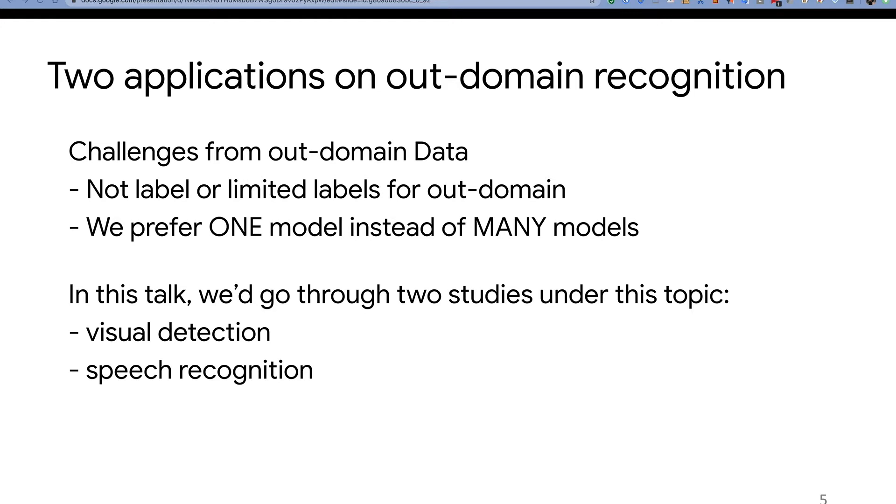For the out-of-domain recognition problem, we have two constraints. First, we need no labels or very limited labels for out-of-domain. Second, we prefer one model instead of many models, because many models will bring huge cost for serving and maintaining quality. For this big picture, we're going to show two studies: first is visual detection, another is speech recognition.